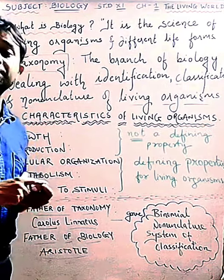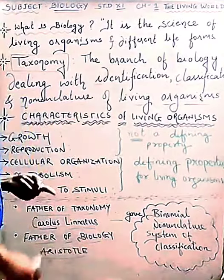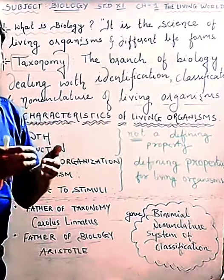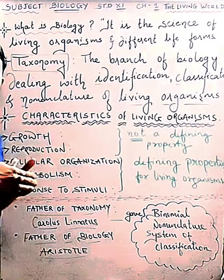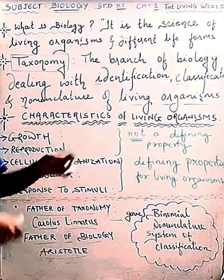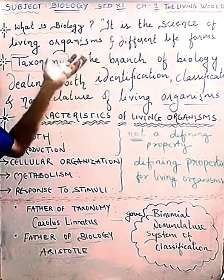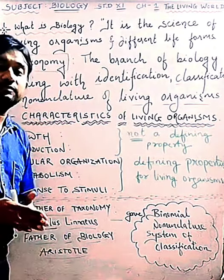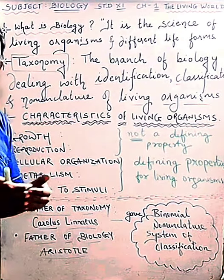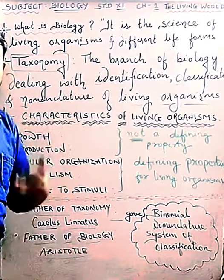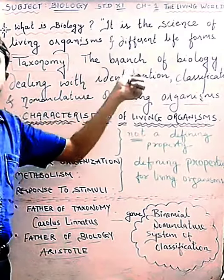Today we will discuss Chapter 1 of Class 11: The Living World. Before we start the chapter, you should have a clear idea about different terms related to biology. Biology itself is one term. Biology is the science of life — it is the study of living organisms and different life forms.